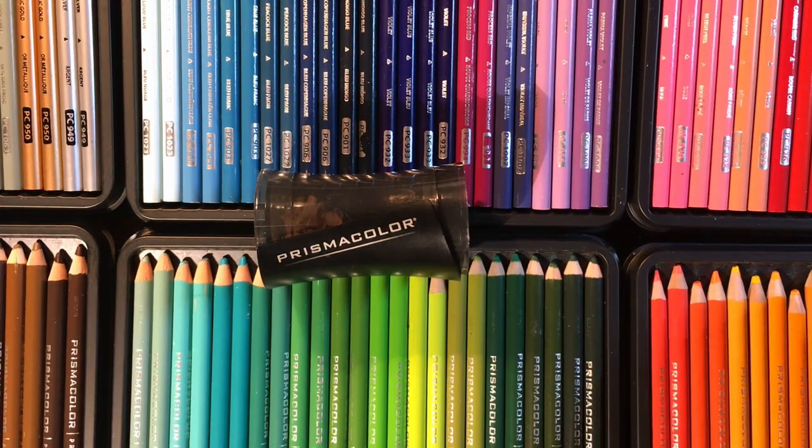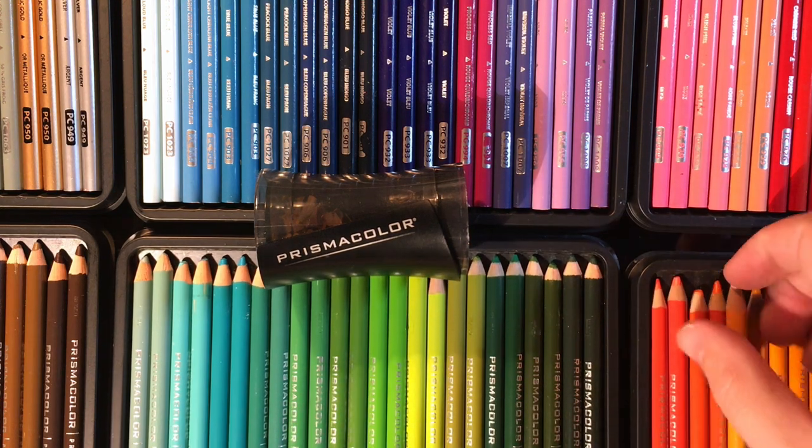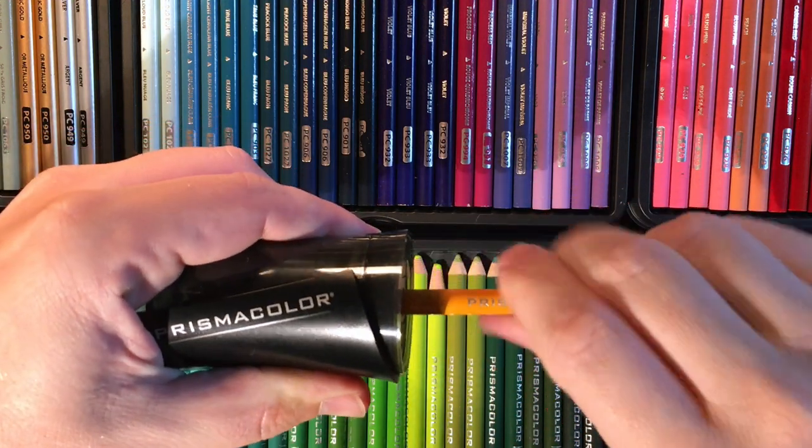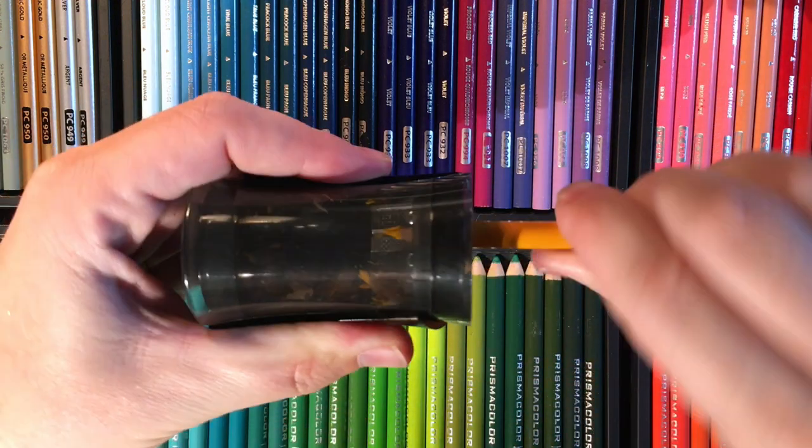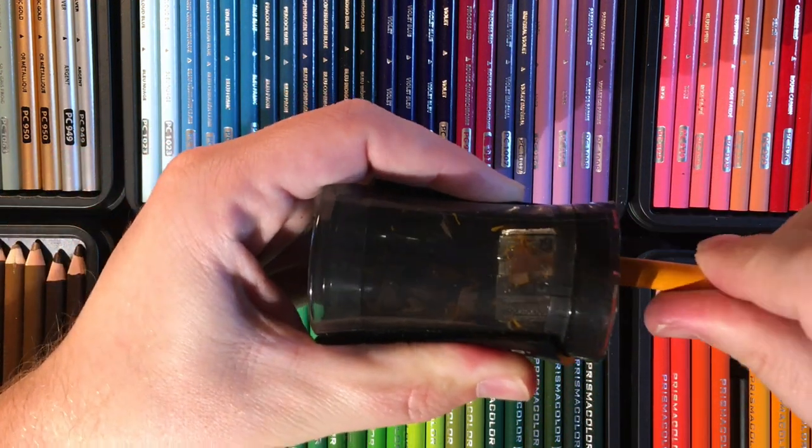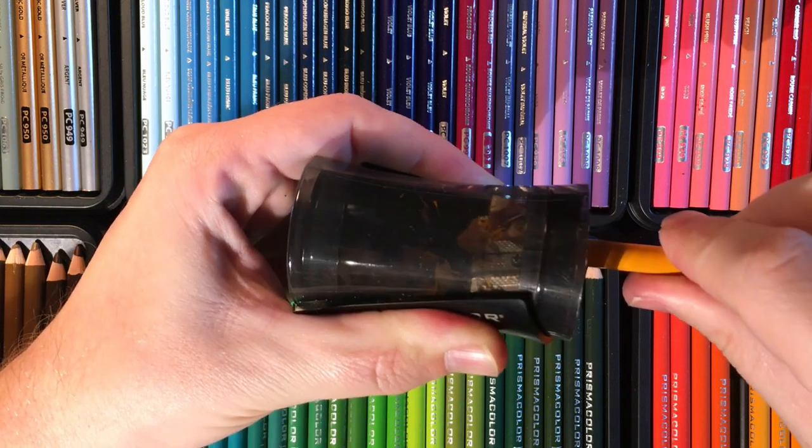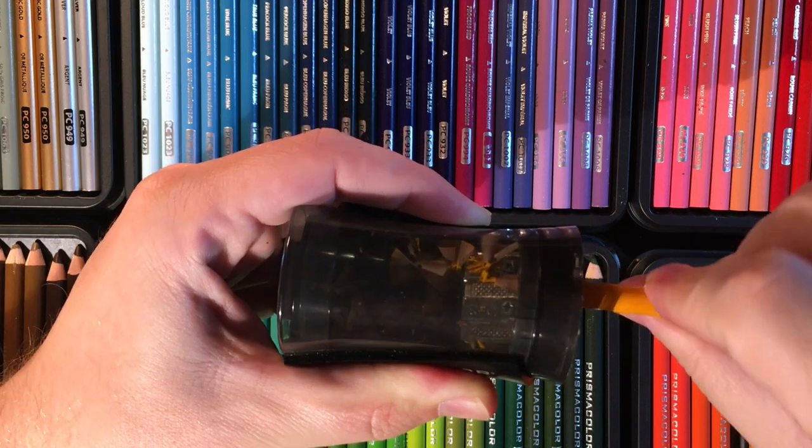So on the Prismacolor pencil sharpener there are two options. You've got a little bit shorter tip length or you can also do the longer tip length. It gives you a little bit more of a point. However, I actually prefer doing it on the shorter tip. It seems like it's a little bit stronger, less likely to break.